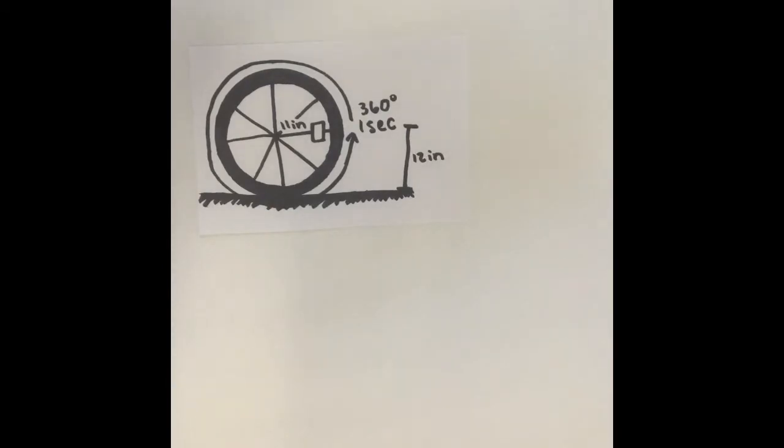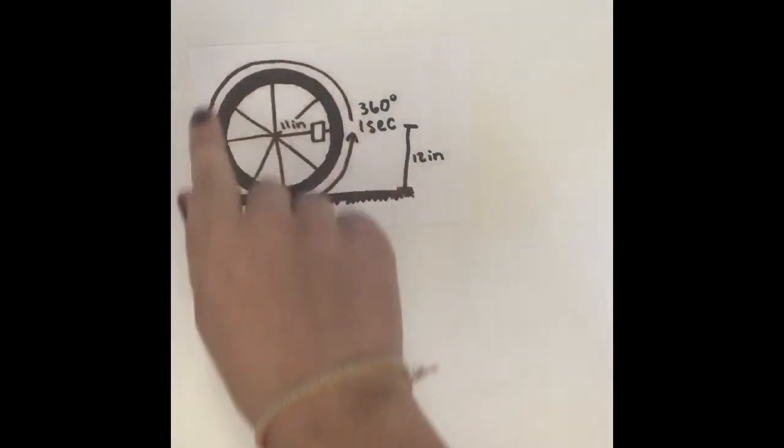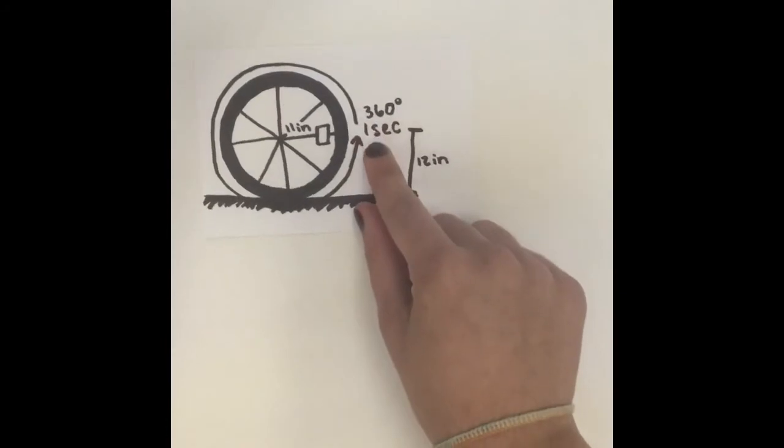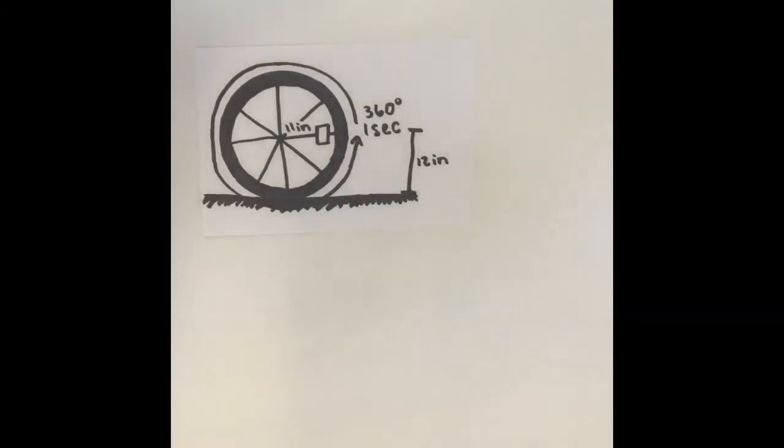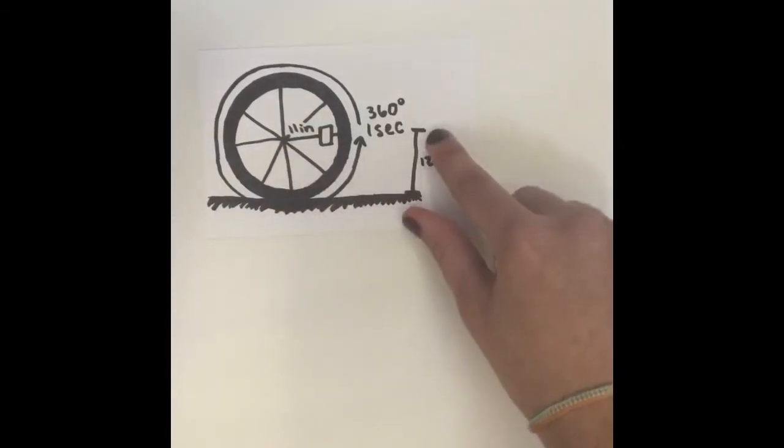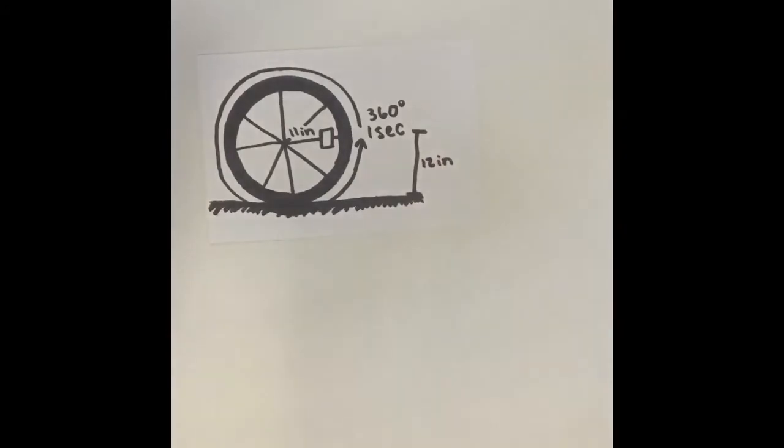The experimenters also found that the bike wheel will make a full counterclockwise revolution every second as shown by this circle right here that says 360 degrees every one second. They also found that the center of the bike is 12 inches off the ground. Here's the center of the bike which lines up with this line showing it is 12 inches from the ground.